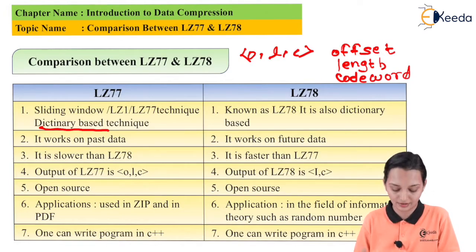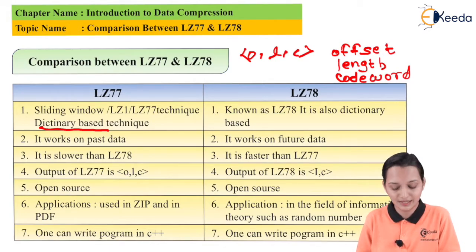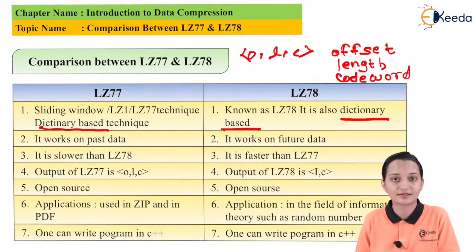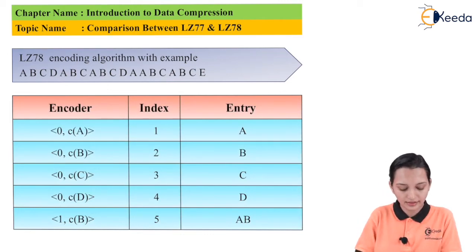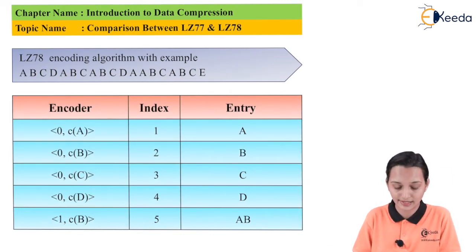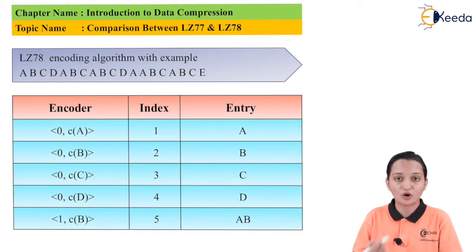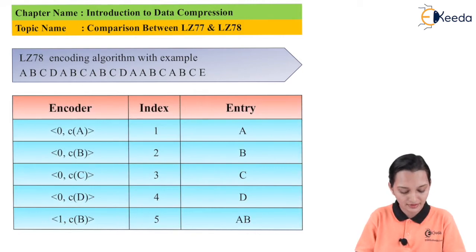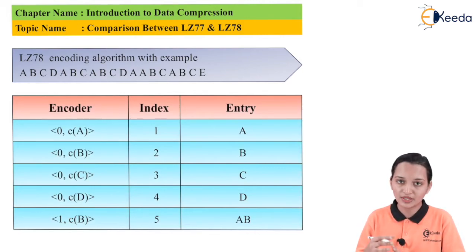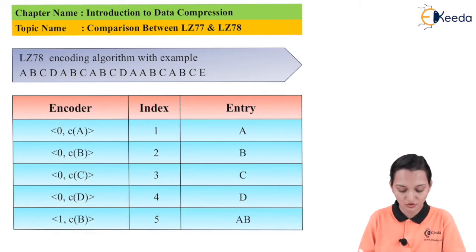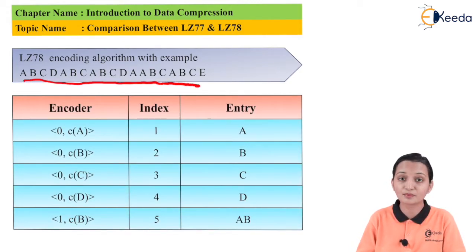Now moving to LZ78. First: it is known as LZ78, and it is also based on the dictionary — it is also a dictionary-based technique. In LZ78, the string of characters is given. Both techniques come under lossless, so we must do compression on string of characters in terms of text or program. With the help of the given code itself — the dictionary of the given code — we do the encoding with LZ78 technique. So again, it is dictionary-based. Dictionary means the provided input.